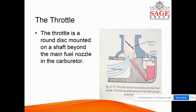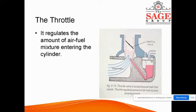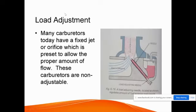The throttle is a round disc mounted on a shaft beyond the main fuel nozzle in the carburetor. Air is entering here, fuel enters here, and the throttle controls the air-fuel mixture completely — the power output is controlled by the throttle.